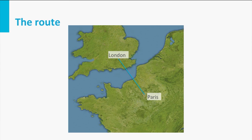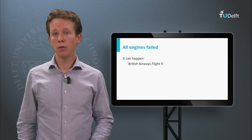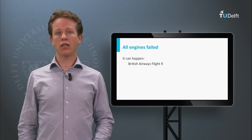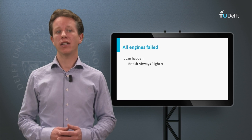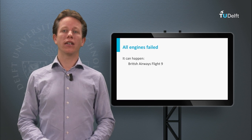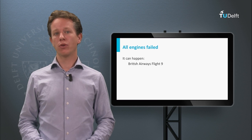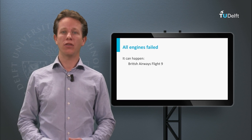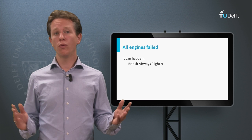Now imagine that this airplane encounters a technical problem and all four engines suddenly stop working. This might seem like a hypothetical problem, but it could actually occur when the fuel runs out or when it flies through a cloud of volcanic ash. In 1982, British Airways Flight 9, a Boeing 747, flew through a cloud of volcanic ash above Indonesia, which actually resulted in the failure of all four engines.